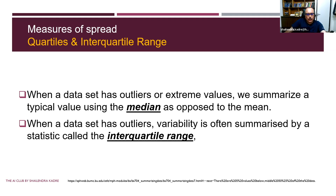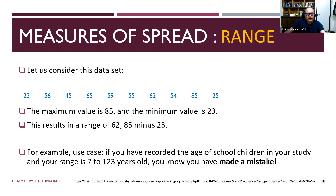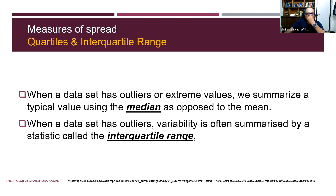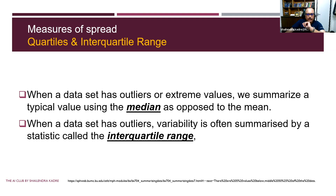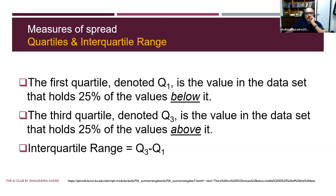Mean represents data properly only when there are no extreme outliers — neither extremely low nor extremely high. When standard deviation is close to zero, mean represents the true value. If outliers are present, use median instead of mean. An even better measure is interquartile range, which I will explain in the next slides.